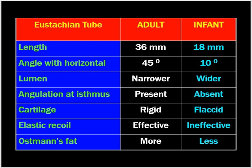Adults have rigid cartilage in the Eustachian tube as support, whereas in children the cartilage is flaccid. Therefore it leads to ineffective recoil of the Eustachian tube. Ostman's pad of fat is more prominent in adults and less in children.